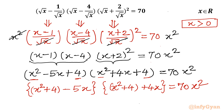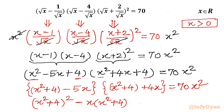Now I'll expand the product. (x² + 4)(x² + 4) gives (x² + 4)². Then (x² + 4)(4x) minus (x² + 4)(5x) gives minus x(x² + 4), since 4x minus 5x equals minus x. Finally, minus 5x times plus 4x gives minus 20x². The right-hand side remains 70x².